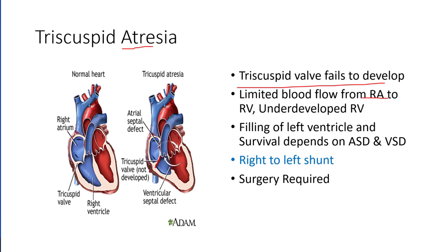The filling of the left ventricle is impaired because we need the right ventricle to pump through the pulmonary artery to get to the pulmonary circulation and come back as the pulmonary veins into the left ventricle. We don't have that here. So all filling of the left ventricle is accomplished by usually an ASD or a VSD, which ends up creating a right-to-left shunt, in addition to generally impaired volume in the left ventricle. This requires surgery — some sort of repair or opening up this valve and putting in a mechanical one.